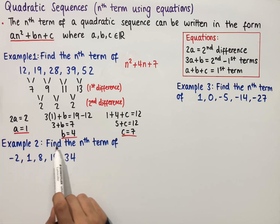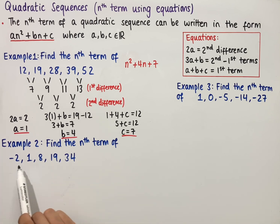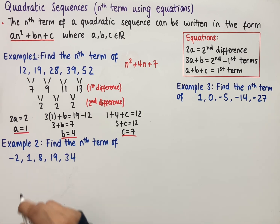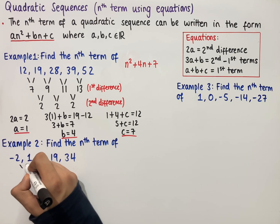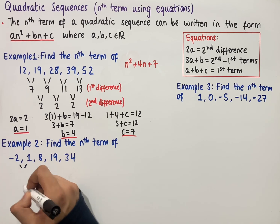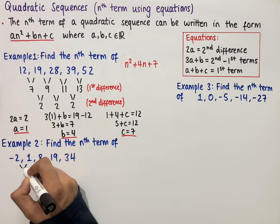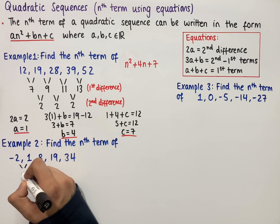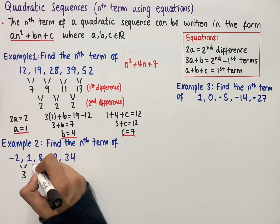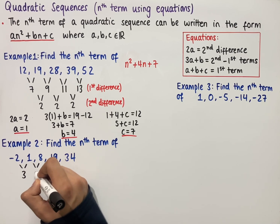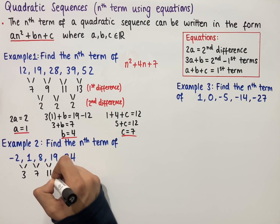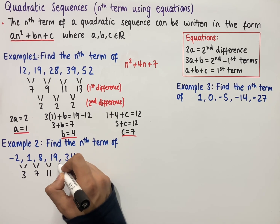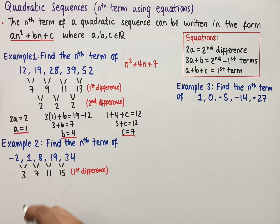The second example says find the nth term of minus 2, 1, 8, 19 and 34. We begin by working out the first difference: 1 minus minus 2, which is the same as 1 plus 2, which is 3; then 8 minus 1 which is 7; then 19 minus 8 which is 11; and then 34 minus 19 which is 15.